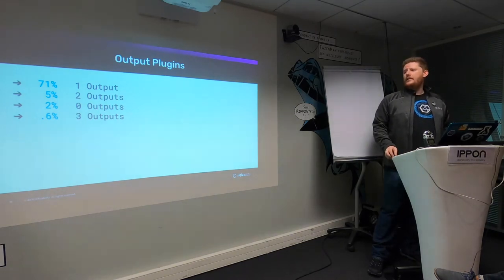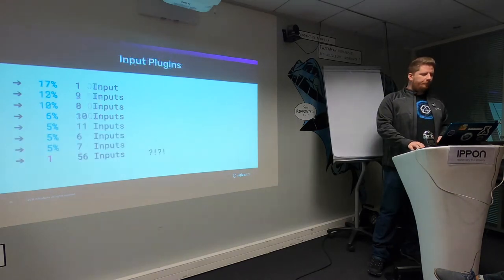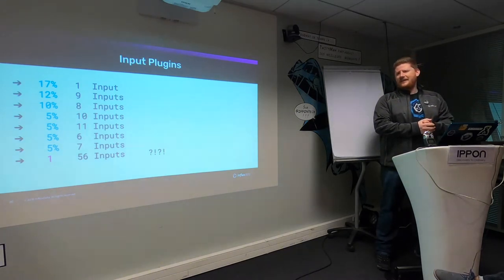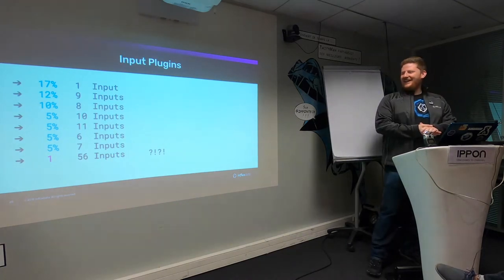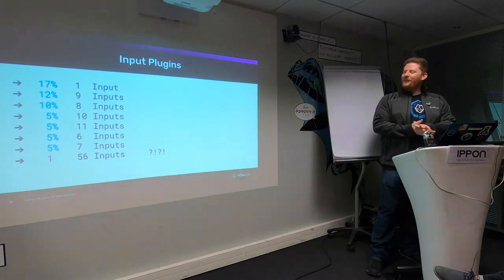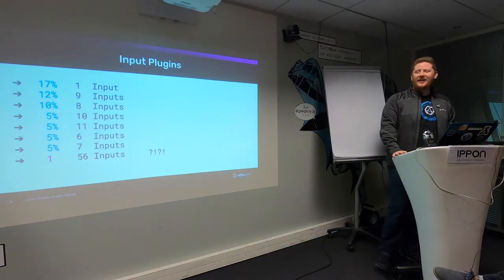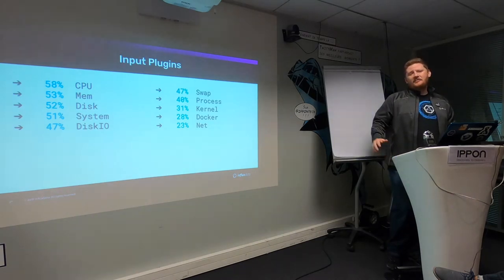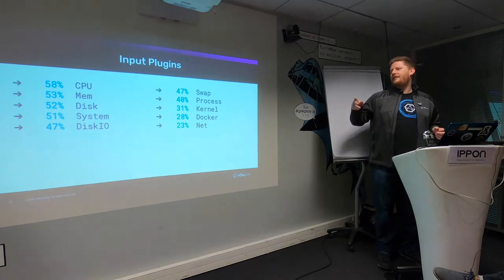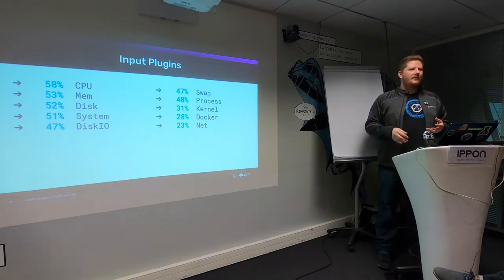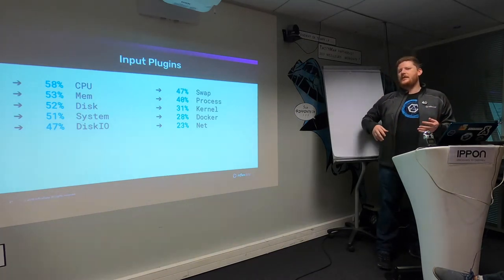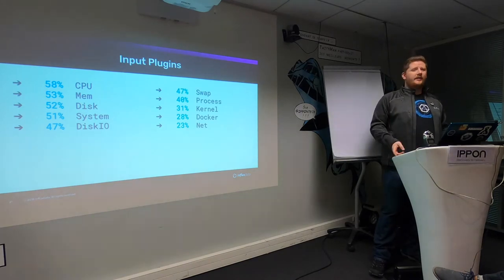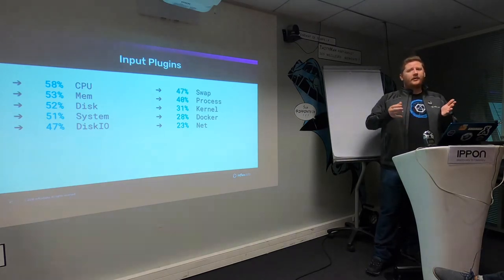As far as output plugins go, 71% of people just use one output, with a couple using multiples. As far as input plugins go, it got a little crazy — some people use one, some people use nine, and one person is using 56. I really need to dig into that — 56 inputs on a single Telegraph is insane. But we do have a very even spread, and most people are using Telegraph for CPU, memory, disk, system — these are Linux system plugins. 28% are using Docker plugins, so a good percentage of them have Docker running on their host even if Telegraph isn't inside it.